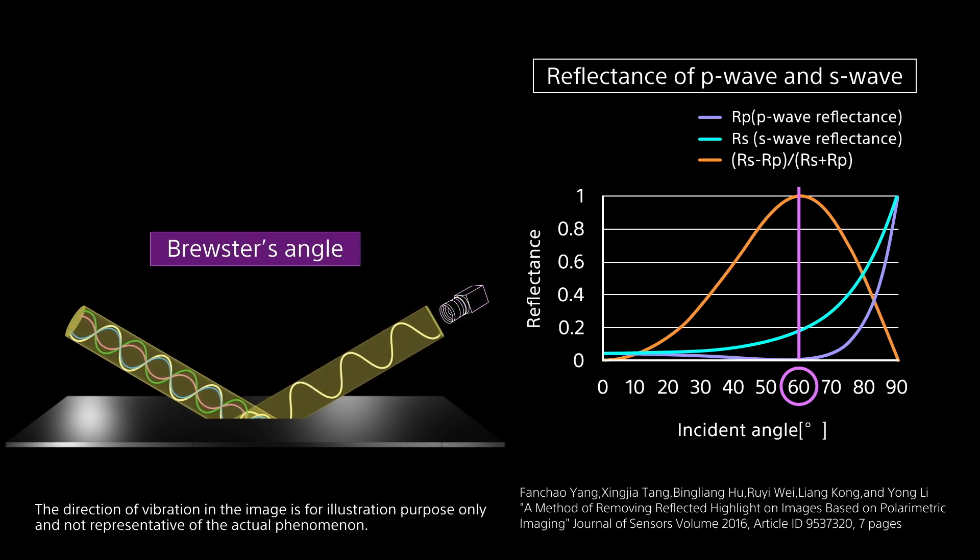When the light source is unpolarised, it is important to set the camera angle at this Brewster's Angle to get the optimised information.